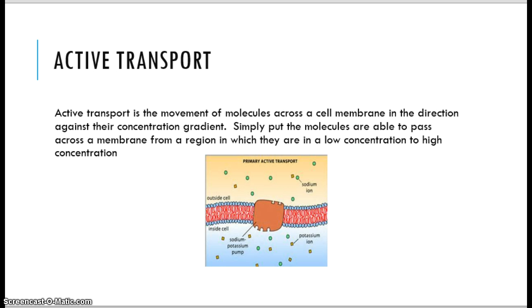Active transport is getting molecules across the membrane in a direction against their concentration gradient, so they're able to pass from one region to another where they're needed.